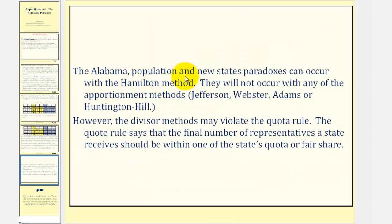The Alabama population and new states paradoxes can occur with the Hamilton method. They will not occur with any other apportionment methods. However, the divisor method may violate the quota rule. The quota rule says that the number of representatives the state receives should be within one of the state's quota or fair share. I hope you found this lesson helpful.